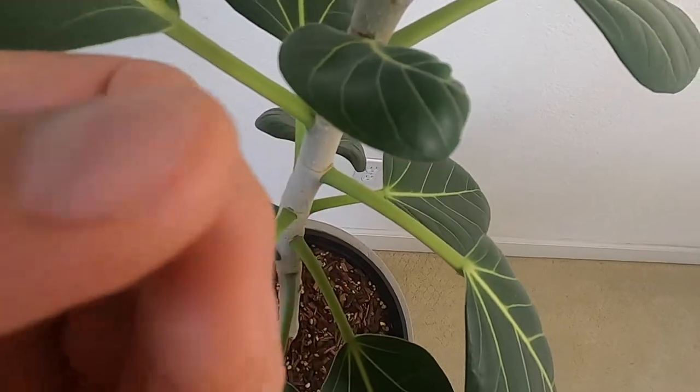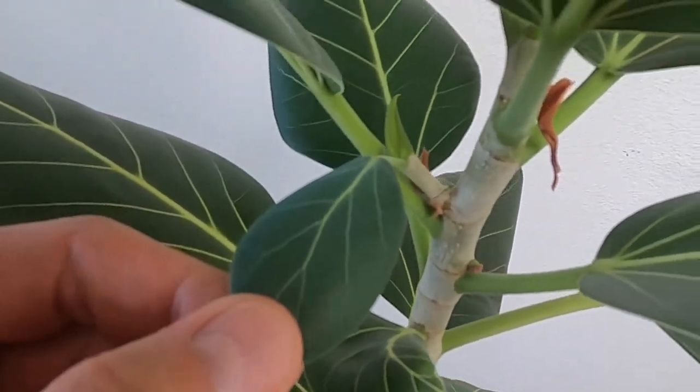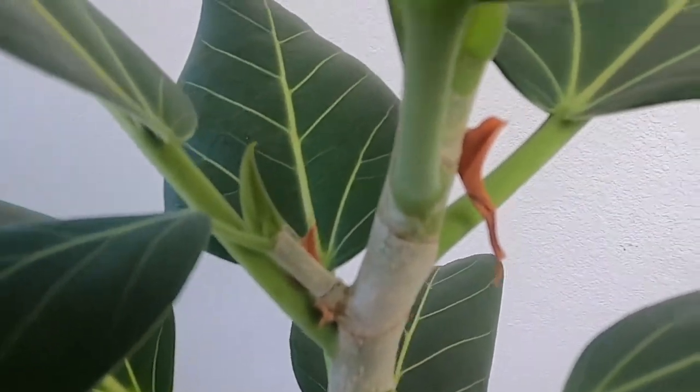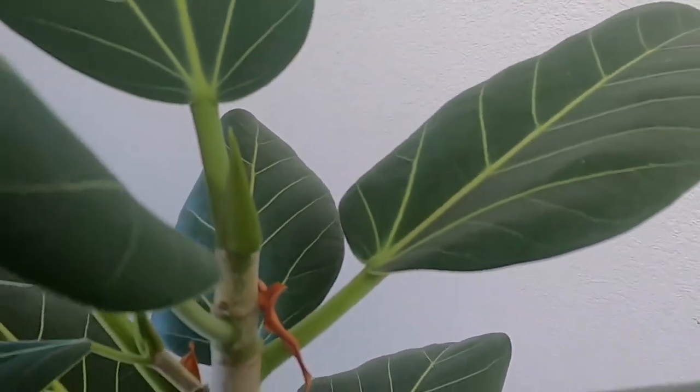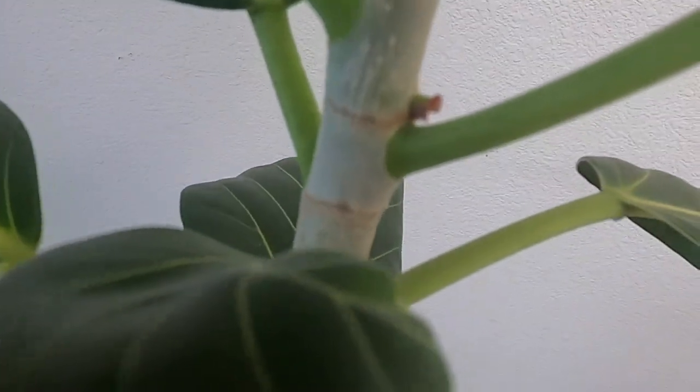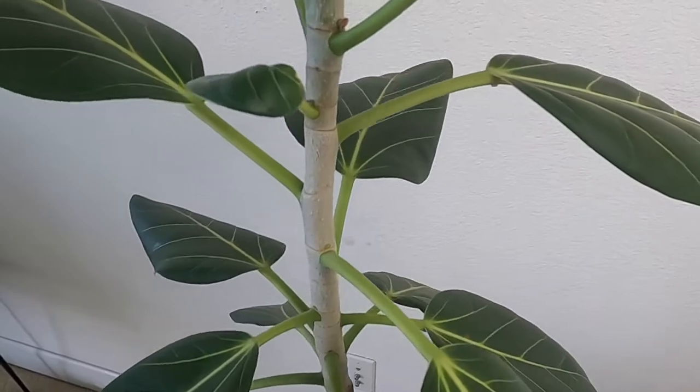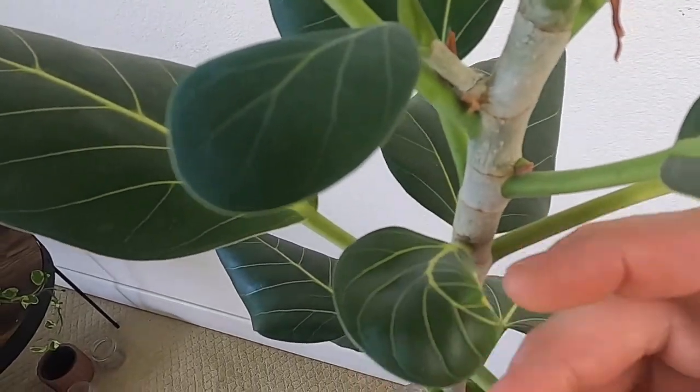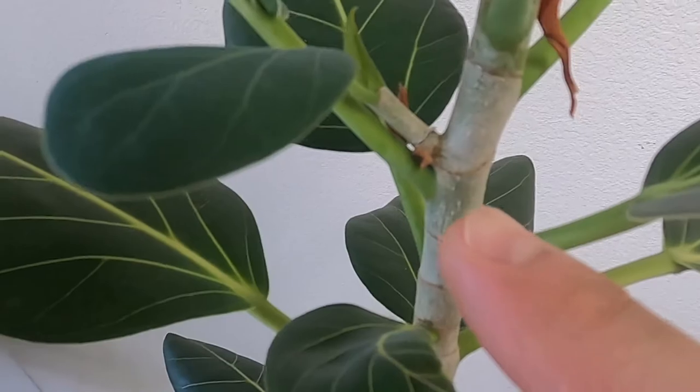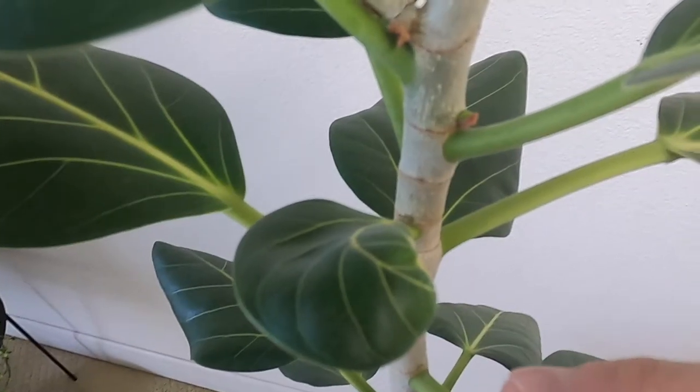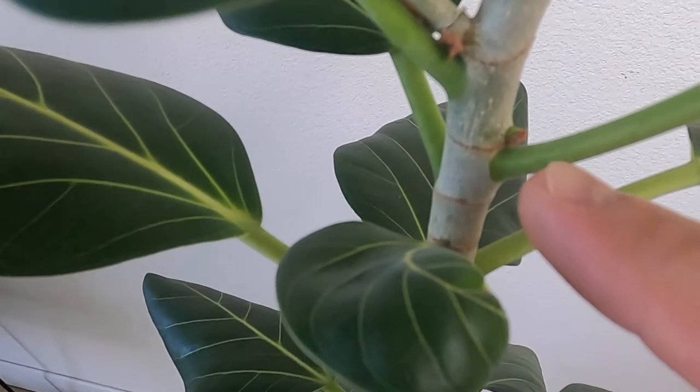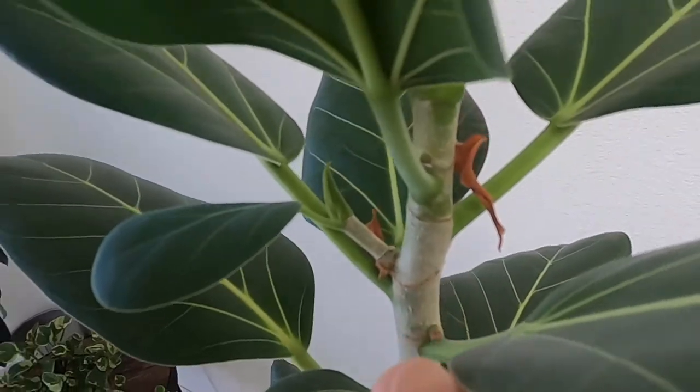So since then, you can see this tiny leaf here. This is the first leaf that came out after the root pruning. Since the root pruning we've gotten one, two, three, four, five, six, seven leaves on the main stem and then this is actually a whole new branch that started and then there's this other bud that has swollen here but it hasn't popped off quite yet.